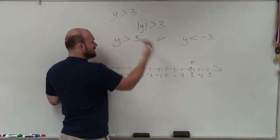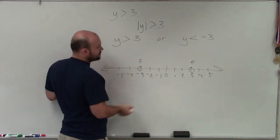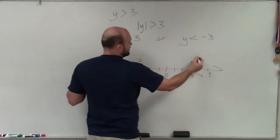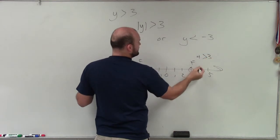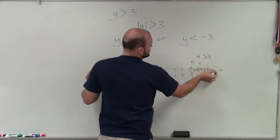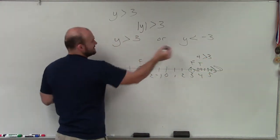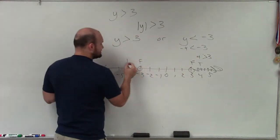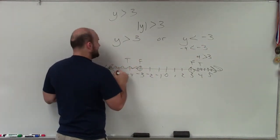Then here, this one says y is greater than 3. That means all the values that are greater than 3. So I look at 4, is 4 greater than 3? Yes, that's true. So I'm going to shade to the right. Is negative 4 less than negative 3? Yes, that's true. So I'm going to shade to the left.